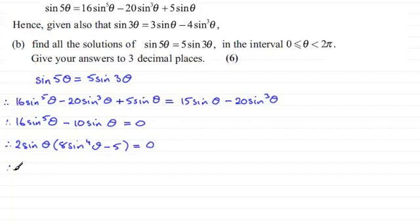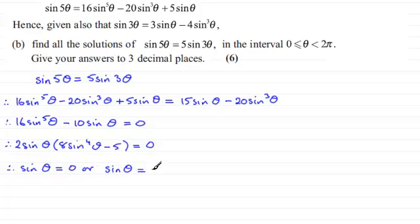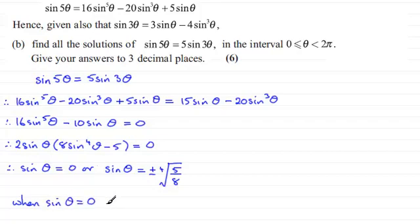Each factor could equal 0. For sinθ = 0, that gives θ = 0 or π radians. For the other factor, 8sin⁴θ minus 5 = 0 means sin⁴θ = 5/8, so sinθ equals plus or minus the fourth root of 5/8, since it's an even-powered root.